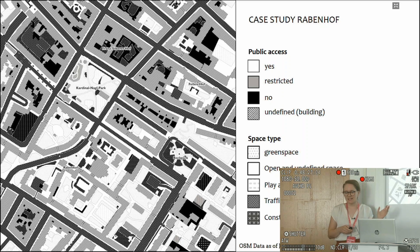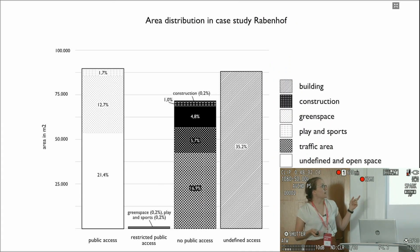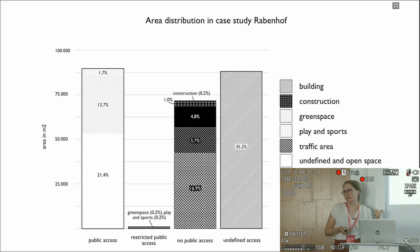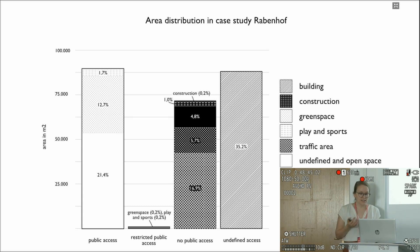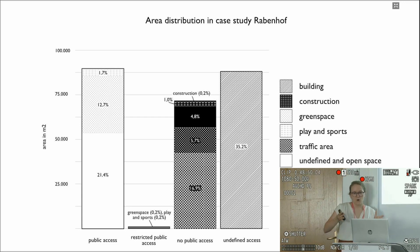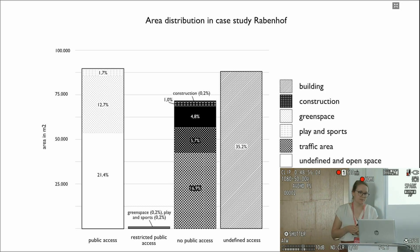The analysis allows you to get information about how space is distributed within an area. This becomes even more visible when comparing the area distribution as a bar chart, where you can see how much space is actually accessible versus not. In this case study, for example, it's almost one third each for accessible space, non-accessible space, and undefined access due to buildings.